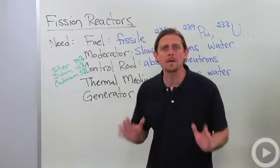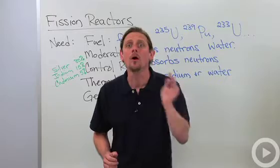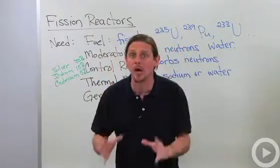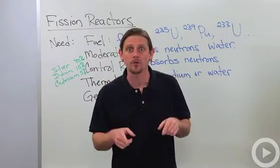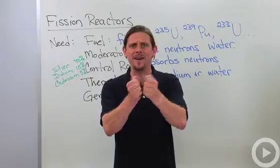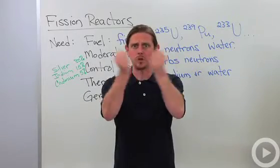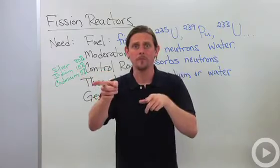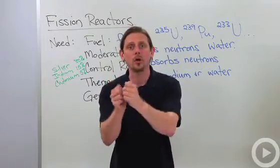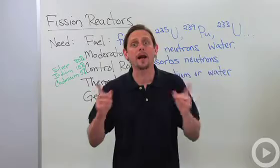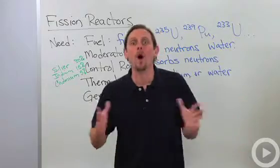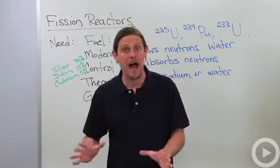First, we need fuel. The important thing about this fuel is that it is a fissile material, meaning if you shoot a neutron at it, there's a good chance it will split in half and send out other neutrons. You initiate this reaction through a natural fission process — a nucleus breaks in half naturally, neutrons come out, and those neutrons go and split other nuclei. Every time a nucleus is split, it releases energy and more neutrons, giving you more and more energy — called a chain reaction.